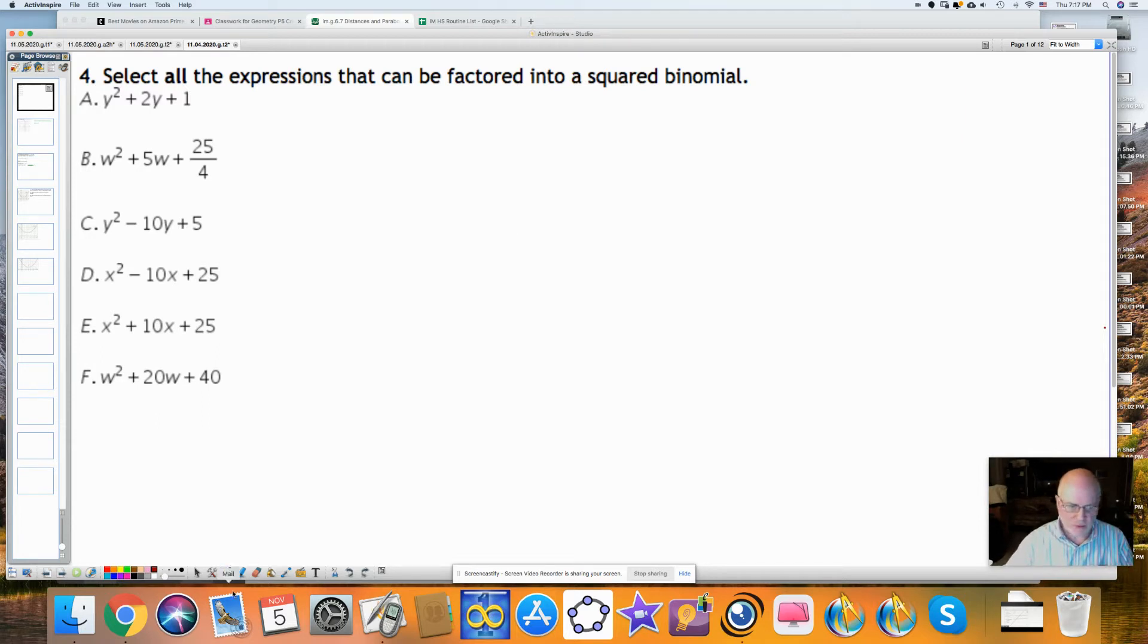You'll remember that if we were going to write it into a squared binomial, it would be in the form of (x + a)². This is the squared binomial. If you were to multiply this out, you would get the perfect square trinomial: x² + 2ax + a², where the middle term coefficient is 2a, and this would be a². So if this is 2a, then a would be 1, and 1² is 1. So this is one of them.